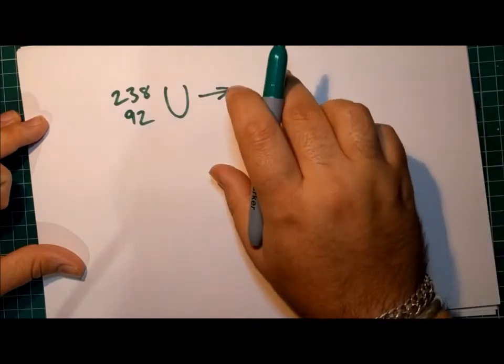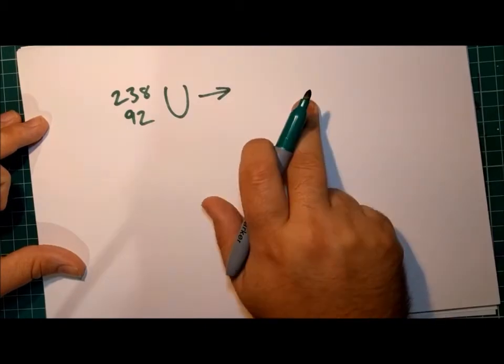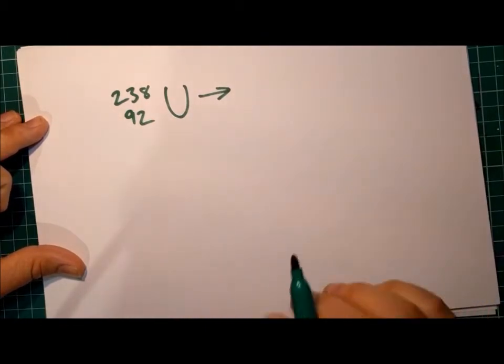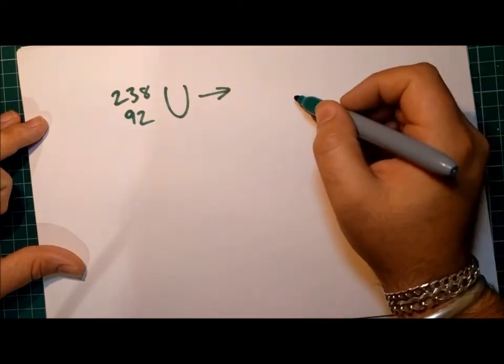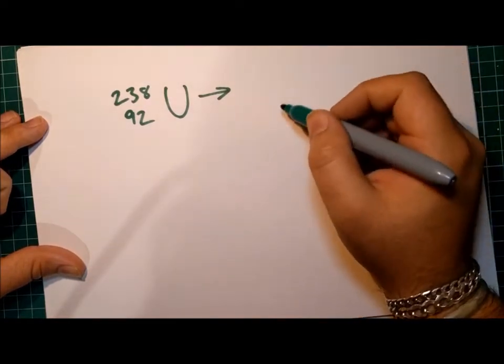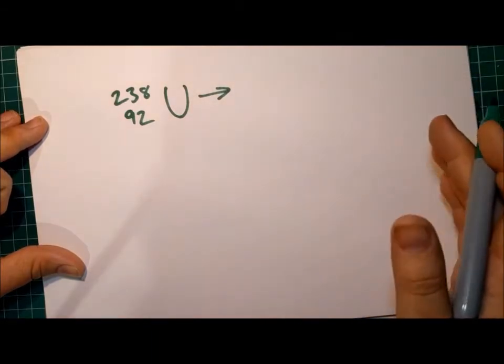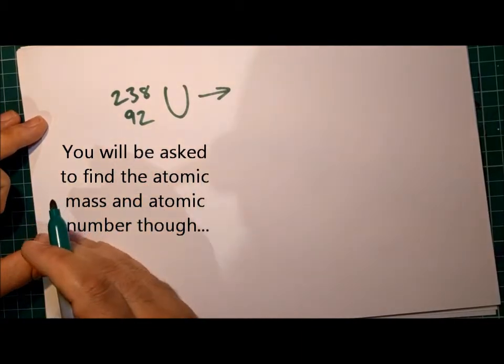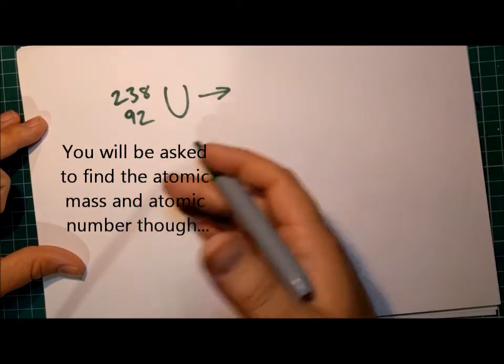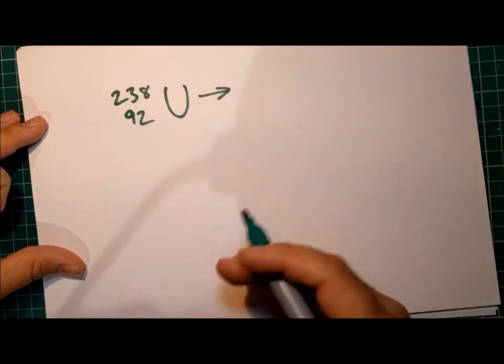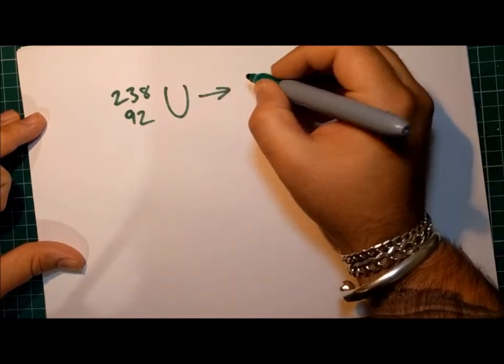Then we would write both the alpha particle itself and whatever form of nucleus is left behind. Now in an exam question, they are very likely either to give you the name of the element formed or simply give you a large X for any element. But you will not be asked to work out what element is produced from alpha, beta or gamma emission. In this example, I'm going to show you the element. But in an exam question, they would probably just give you X as a symbol.